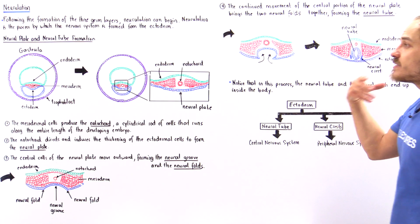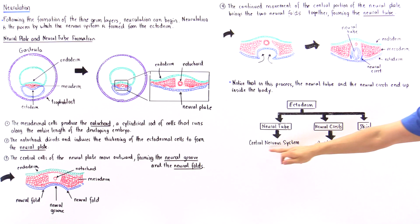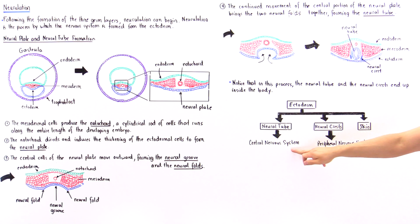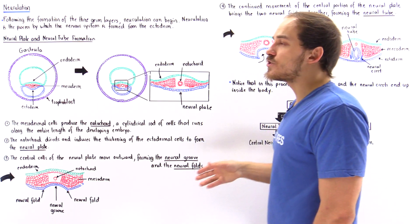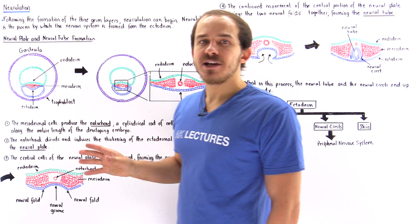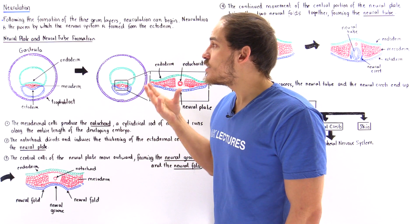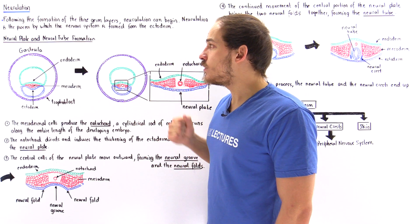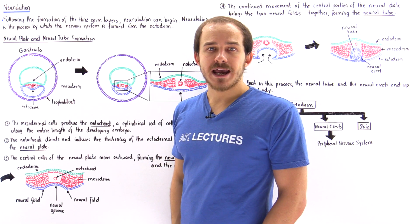This process by which we form the neural tube and the neural crests, which eventually give rise to the central nervous system and the peripheral nervous system, is known as neurulation. It takes place as soon as we form the ectoderm layer during the process of gastrulation.